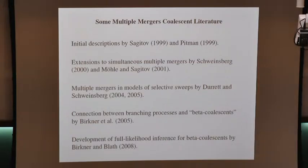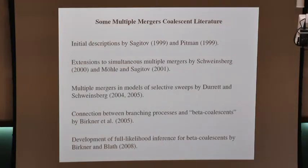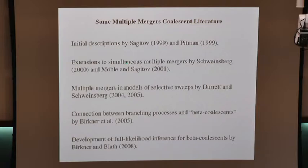Here's a little reference to the multiple mergers coalescent literature. There were some initial descriptions around the turn of the century by Sagitov and Jim Pitman — these are pretty mathematical. The Sagitov paper is more readable for a biologically minded person; Pitman is not readable for almost any minded person. Sagitov's paper actually has a dynamical population model. These papers described a process in which there was only one multiple merger event at any given time. But as you'll see in the model I'll describe, there can be cases where more than one such event happens at exactly the same time — so-called simultaneous multiple mergers.